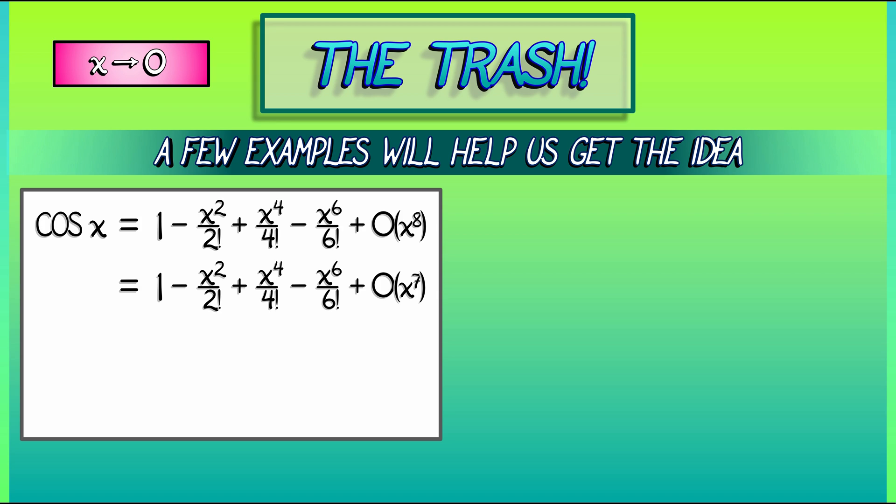Could we have said x to the 6th? Yes, that would also be correct, although less precise. And since we've already got an x to the 6th term in there, we might as well just bundle it together and say that cosine of x is 1 minus x squared over 2 factorial plus x to the 4th over 4 factorial minus big O of x to the 6th.